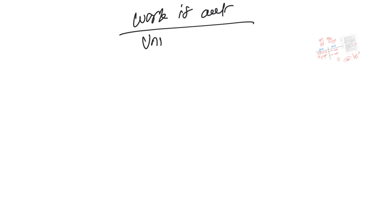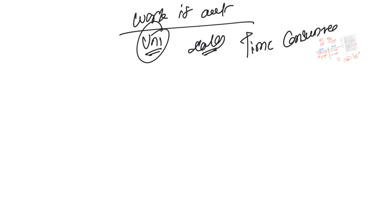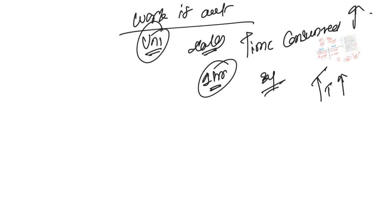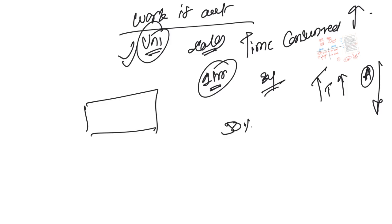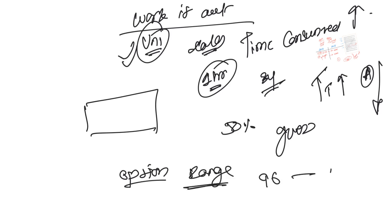Once you see TITA questions, you have to work them out completely because you do not have options anymore. You have to use the unitary method and get into calculations, which means time consumed to solve one particular question goes up. Remember, we all have one hour to solve all 34 questions. The moment time taken for one particular question goes up, your attempts are going to go down by default because you only have one hour.